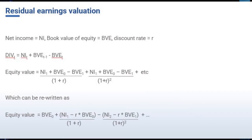We can then substitute that term into the discounted dividends model. What we end up with is known as the residual income valuation model or the abnormal earnings model, because we need to forecast a measure of residual income each year. Residual income is net income less the appropriate charge for the capital employed. When valuing equity, the charge for cost of capital is the start of year book value of equity multiplied by the cost of equity capital. We use start of year shareholders' equity since that represents the investment that the shareholders had in the firm. This gives us a measure of normal or required earnings for the year, and we subtract this from net income to get our measure of residual income.